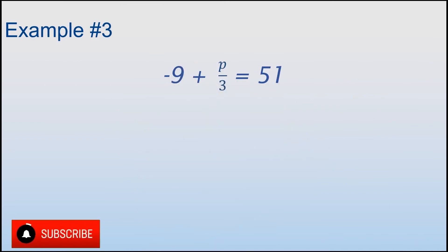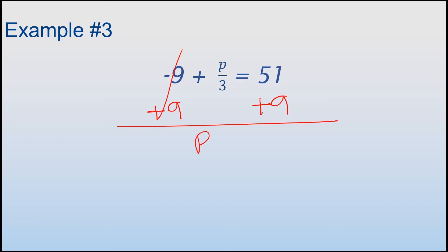Example number three: I'm gonna get rid of this 9 because this looks a little more complicated, so let me get everything that is not touching the variable directly, get rid of all that. Okay, so this is a minus 9, or it's really a -9, which is the same thing as minus 9, so I'm gonna add 9, and that happens to both sides. Get rid of that. This leaves me with P over 3, which equals 60.